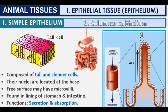Columnar epithelium is called columnar because it has column-like, tall and slender cells — comparatively long cells. The nuclei are located at the base of the cells, as visible in diagrams.